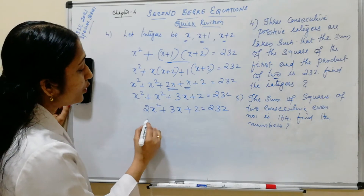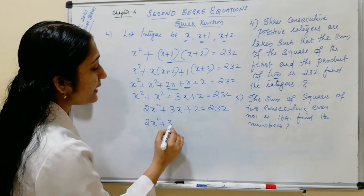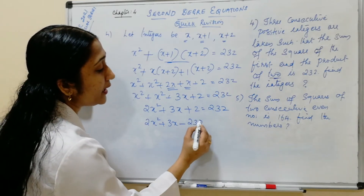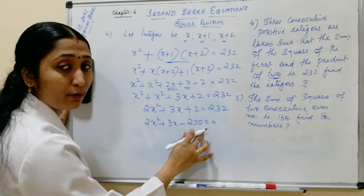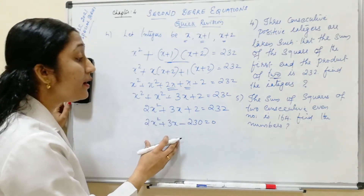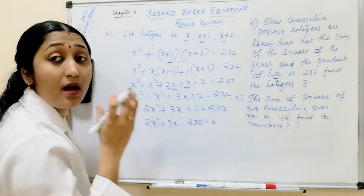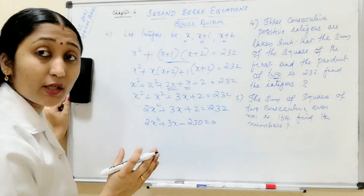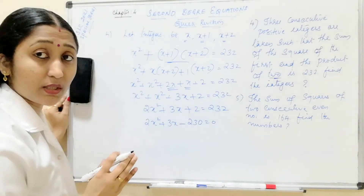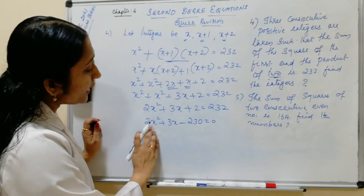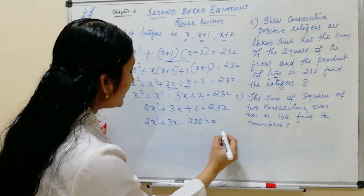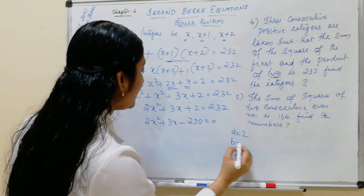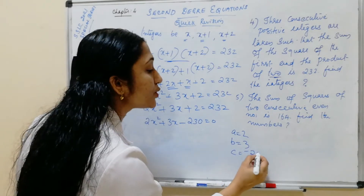Next step: 2x squared plus 3x minus 230 equals 0. This is in the form of a second degree equation. We have to use the quadratic formula. Here a equals 2, b equals 3, and c equals minus 230.